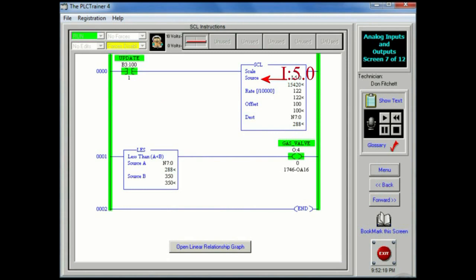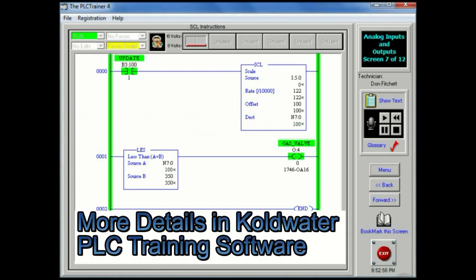SCL or scale instruction is used to scale data from an analog module and bring it into the limits prescribed by the process variable. This process variable may be either an arbitrary number or engineering units such as pounds per square inch, degrees Celsius, ounces, etc. When run conditions are true, this instruction multiplies the source by a specified rate. The rounded result is added to an offset value and placed in the destination. The equation used is: scaled value equals input value times rate plus offset.